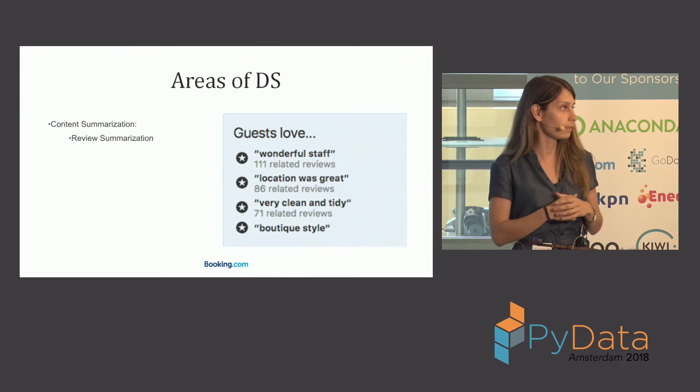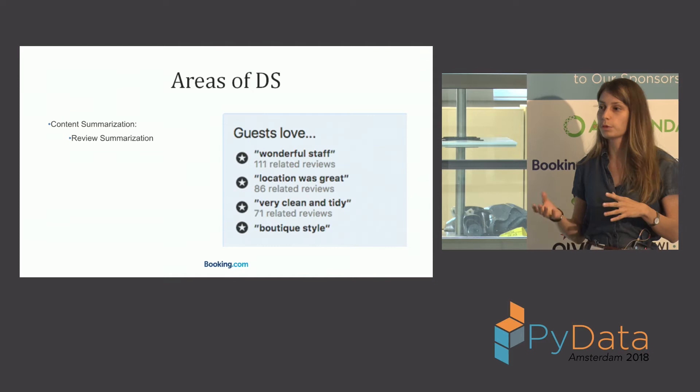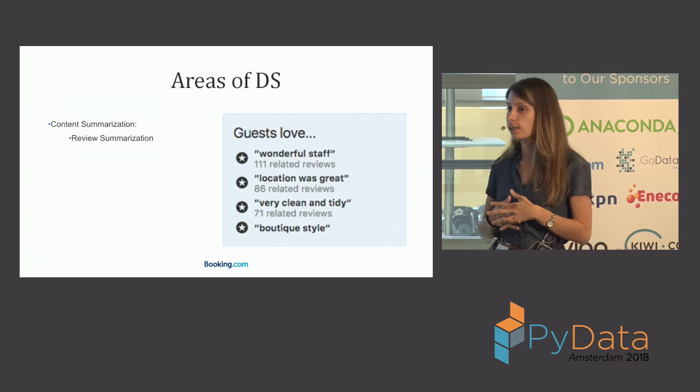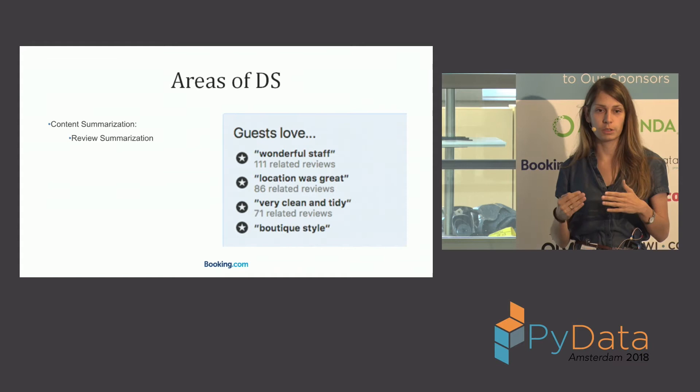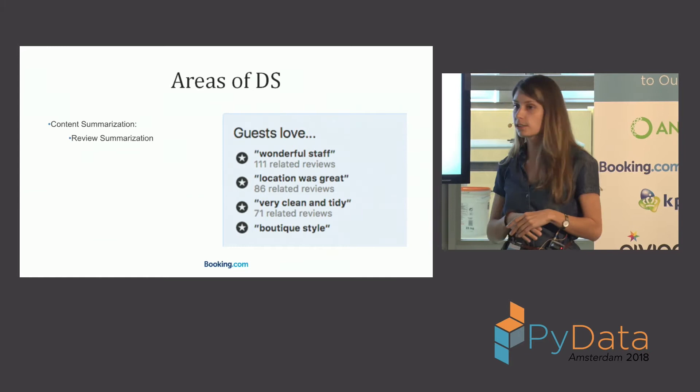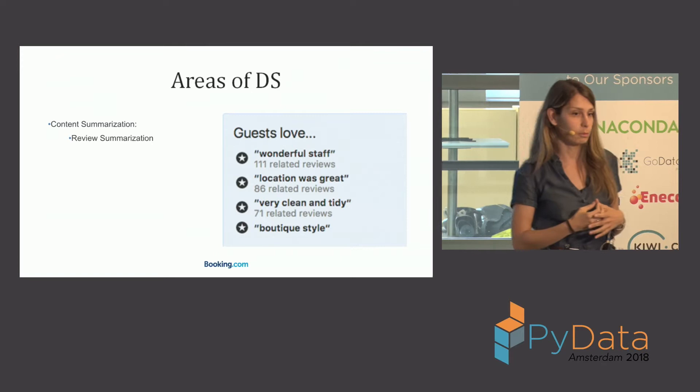For example, look at the review data we have. If you want to book a hotel you usually go to the review page, where there might be a thousand reviews — obviously you don't want to spend three hours reading all of them. So we run a topic detection model that identifies what topics users talked about in their reviews and summarizes them in a small table: 111 users said the staff was great, 86 said the location was wonderful.